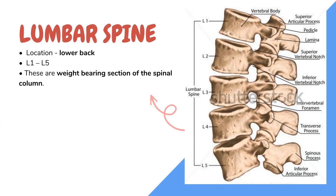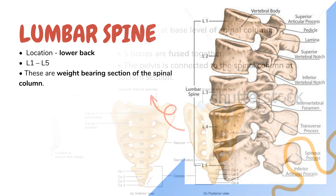Lumbar section. This section is located at the lower back. Here we have 5 bones — from lumbar 1 to lumbar 5, that is L1 to L5. These are the weight-bearing section of the spinal column.